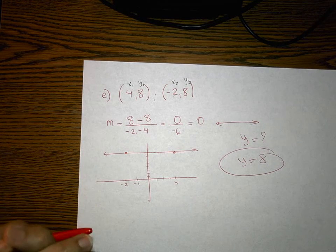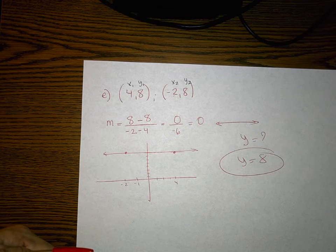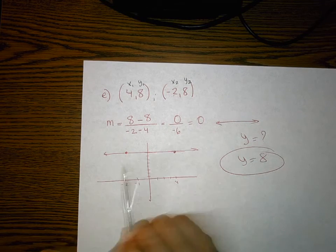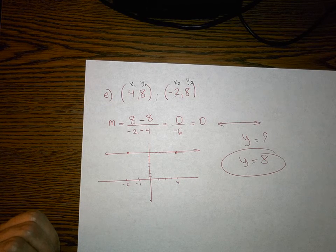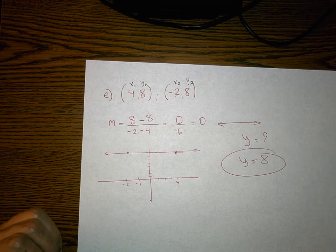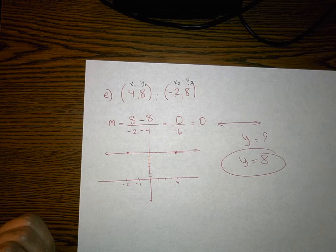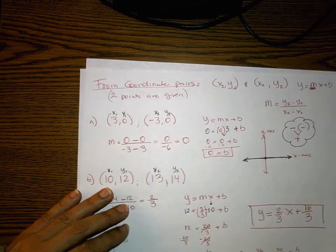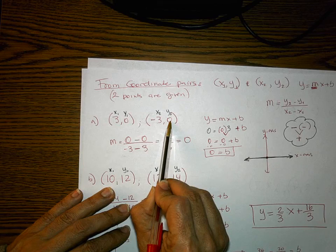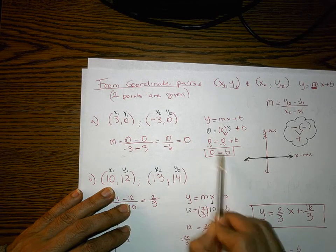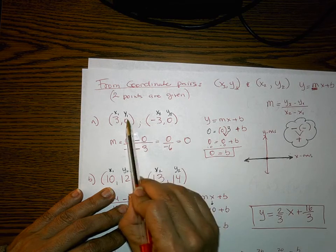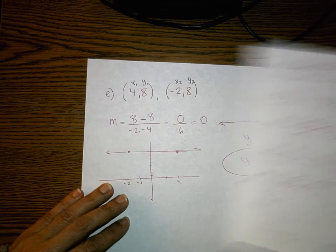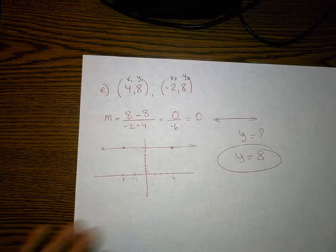Every time I get a slope of zero I know I have a horizontal line — I just need to find its y value. Going back to the previous example, we could have also seen from the y values being 0 that the equation was y equals 0. So y was 0 on both points, confirming the equation. I hope this helps — lots of practice, and come ask me for help. Good luck.